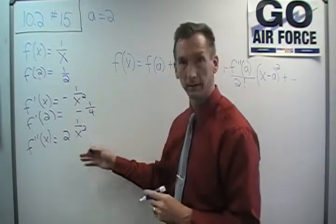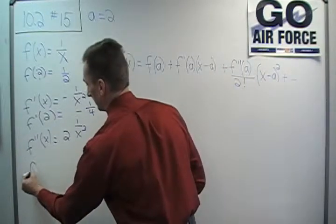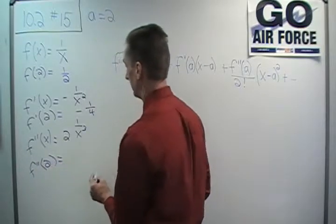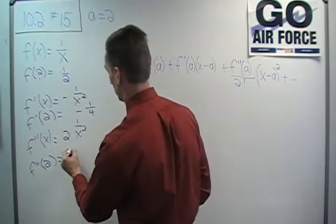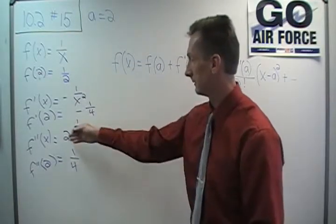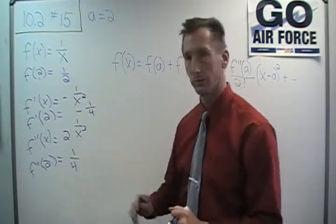And again, same with the second derivative. I'm going to need the second derivative evaluated at 2. And that looks like about 1 over 4. It's 1 over 8 times 2. That gives me 1 fourth. Okay.